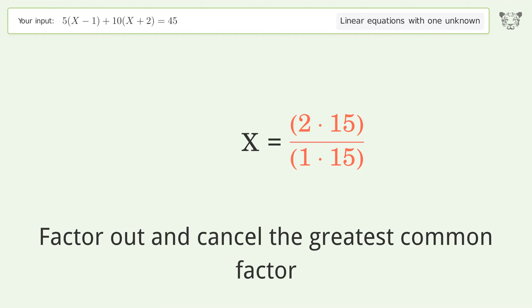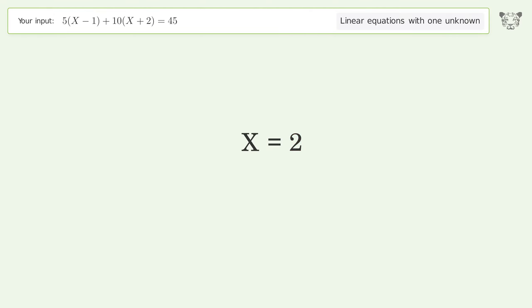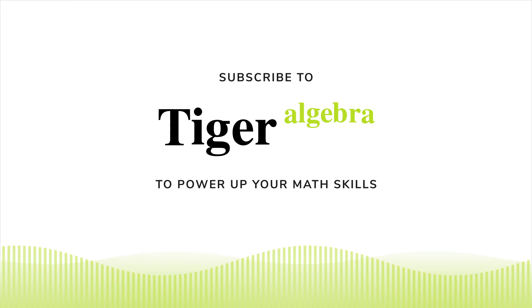Factor out and cancel the greatest common factor. And so the final result is X equals 2.